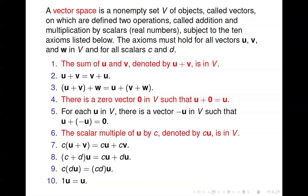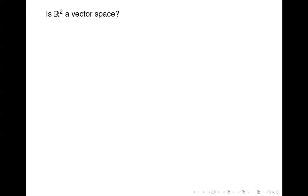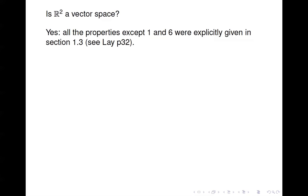You might look at number ten and wonder when would that ever not be the case. The answer goes back to what I said originally: the set V can contain items other than just vectors from R2 or R3, and the operations of addition and scalar multiplication can be defined in nonstandard ways. Based on that, sometimes it could be the case that number ten would not be true. So let's start with R2 — that's a simple set to think about. The answer is yes, R2 is a vector space, because all the properties except one and six were explicitly given in Section 1.3 on page 32.